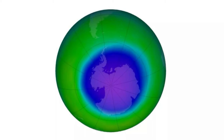As spring approaches in September, the sun's UV rays jumpstart these reactions. Once summer is in full swing, the stratosphere warms up enough to evaporate the clouds, removing the surface on which ozone-destroying chemical reactions take place.